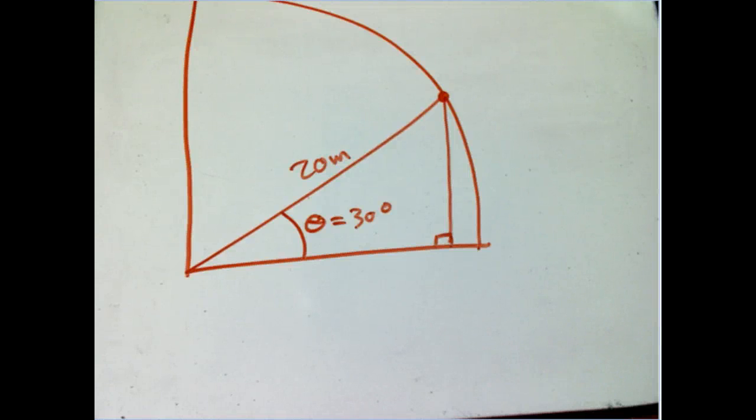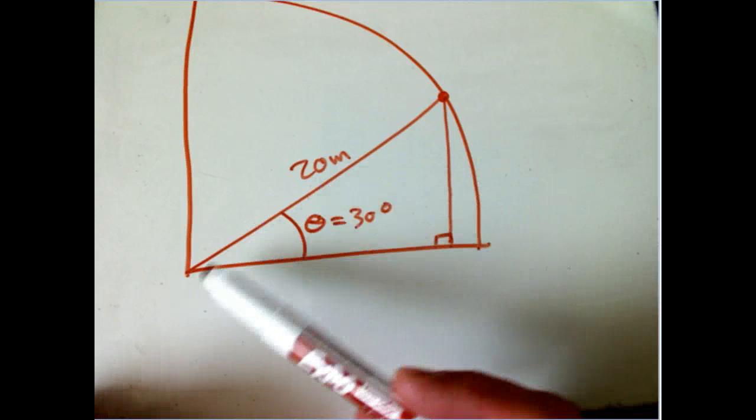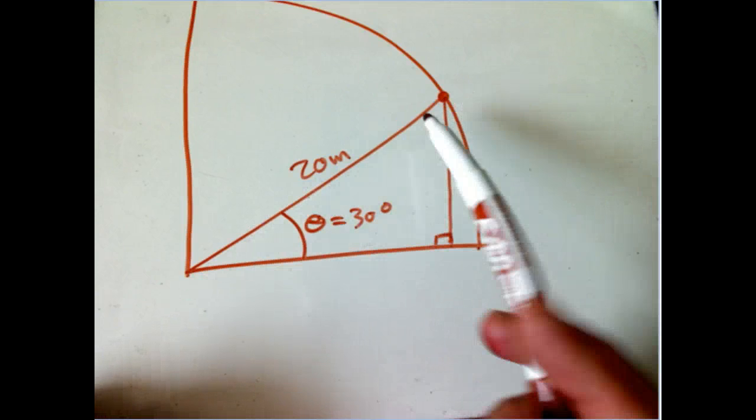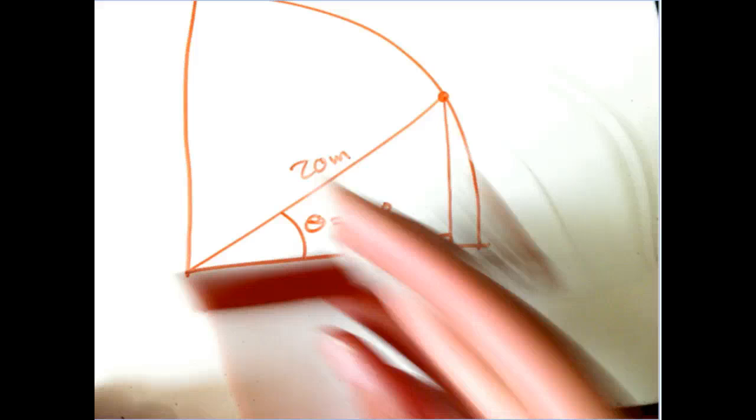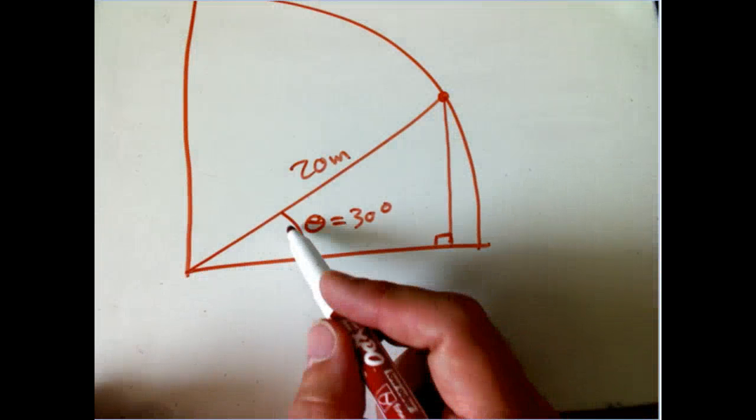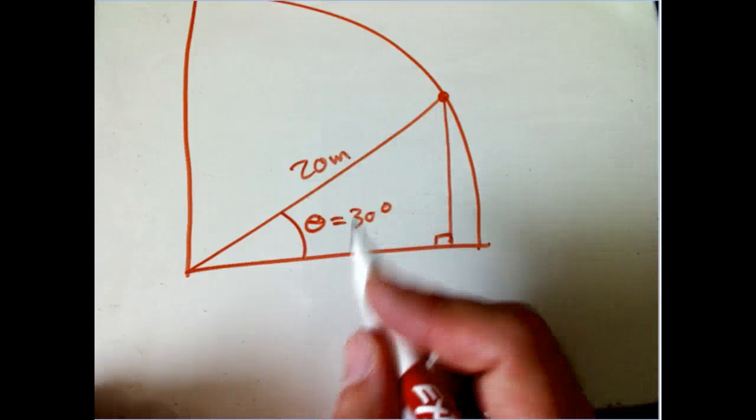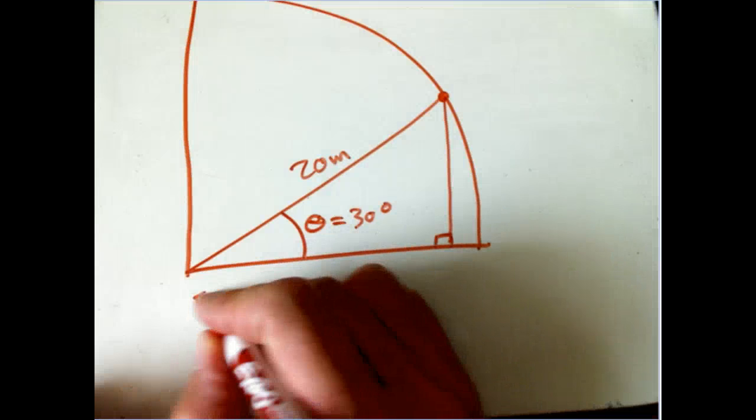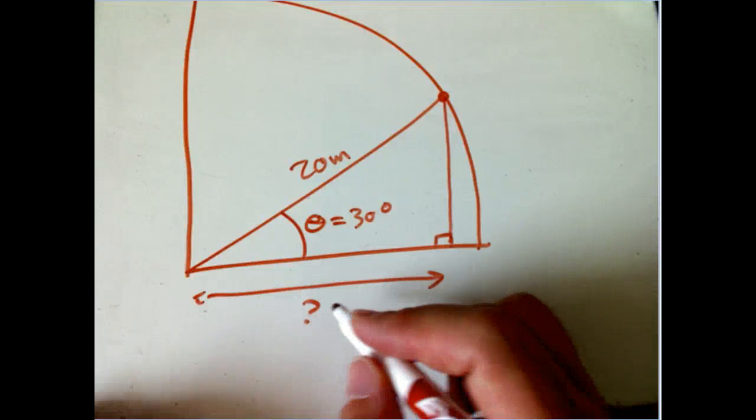Continuing our big picture for trig, let's do a quick example. Suppose we have a 20 meter hypotenuse, something going around in a circle. At this instant, it's 30 degrees from the horizontal, and I want to know how far that distance is going to be.